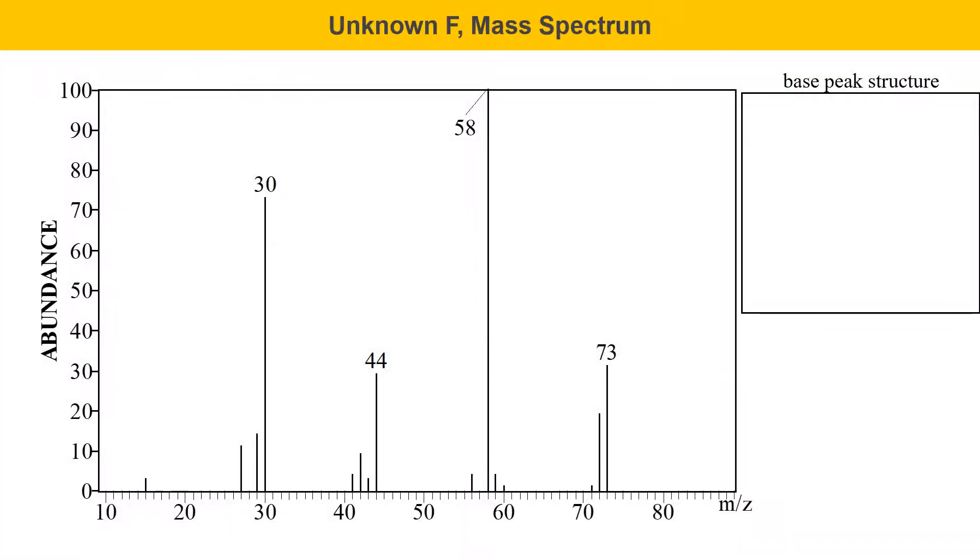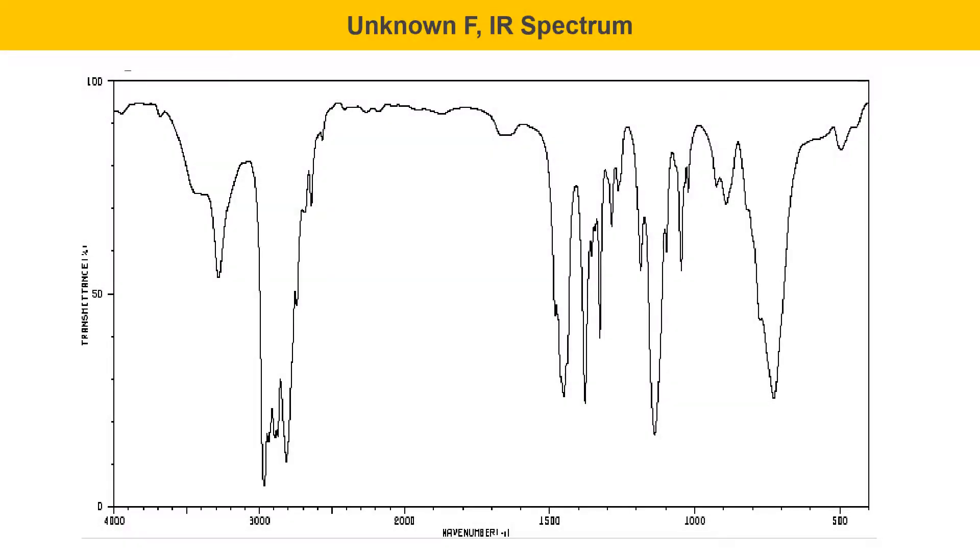And moving on to unknown F, here's a mass spectrum for unknown F. One of the things that's significant here is the molecular ion is odd. That's something to take note of and try to figure out what it's telling you. Here's an IR spectrum of unknown F.